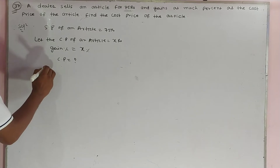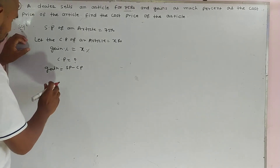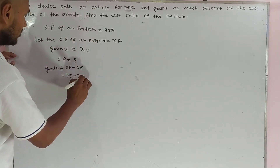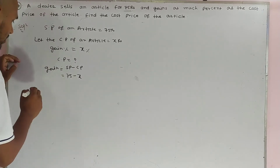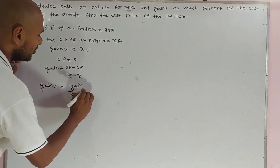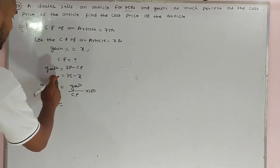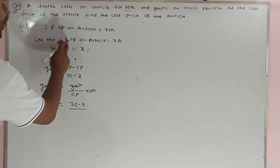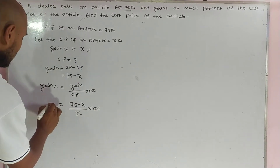We know that gain equals SP minus CP. SP is given as Rs.75, minus CP which we assume is x, so gain becomes 75 minus x. And we know that gain percent equals gain upon CP into 100. This is the formula for gain percent. So we have: (75 minus x) upon x, into 100, and the gain percent is x.